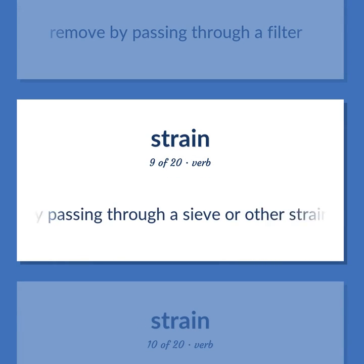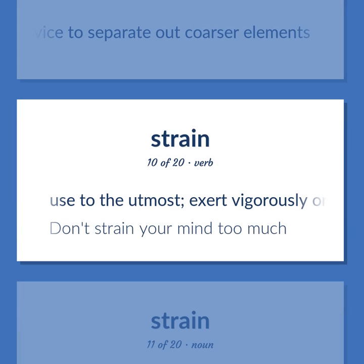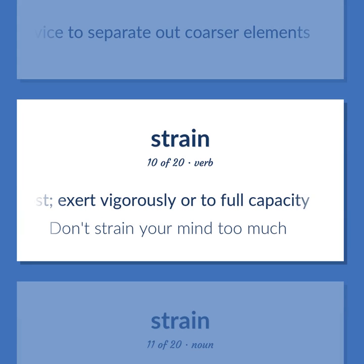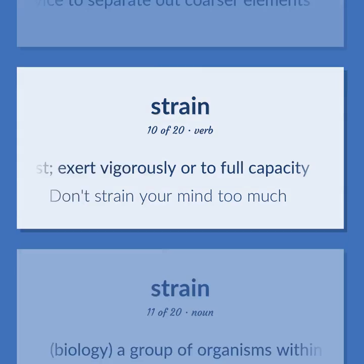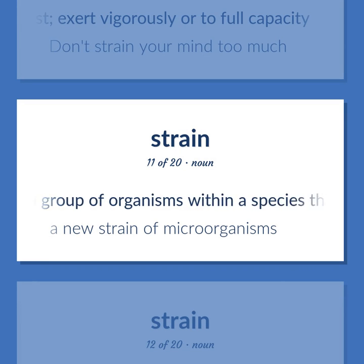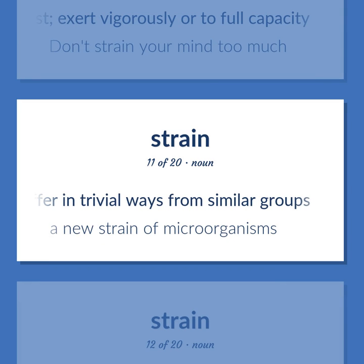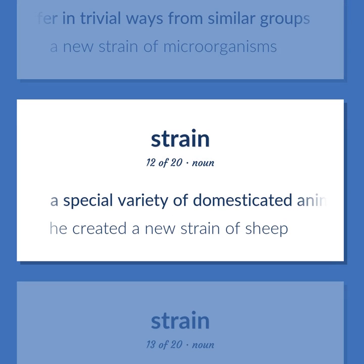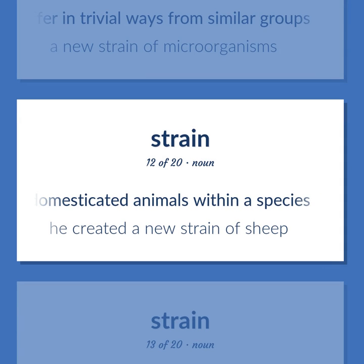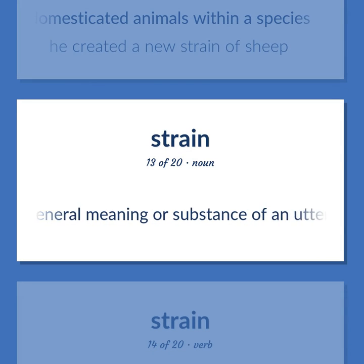Remove by passing through a filter. Separate by passing through a sieve or other straining device to separate out coarser elements. Use to the utmost; exert vigorously or to full capacity. Don't strain your mind too much. Biology: a group of organisms within a species that differ in trivial ways from similar groups. A new strain of microorganisms. A special variety of domesticated animals within a species. He created a new strain of sheep. The general meaning or substance of an utterance.